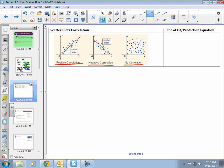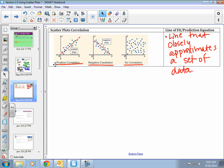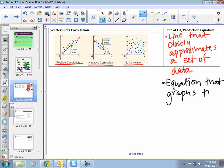Line of fit or prediction equation is a line that closely approximates a set of data. On the example that we just did, we found a line that approximates how many lives we will save over the years. When we find the prediction equation, like we found Y equals X minus 1980, the equation graphs the line of best fit.